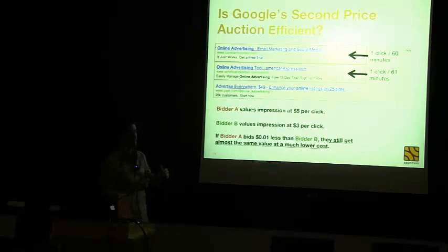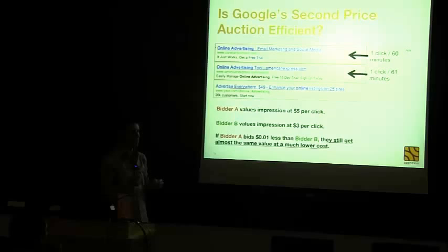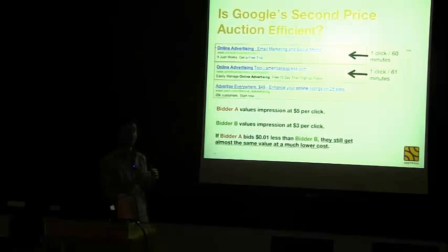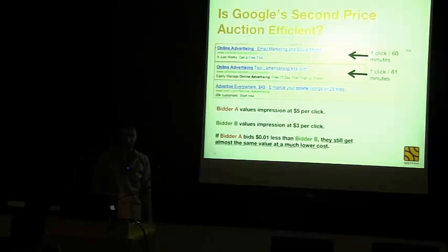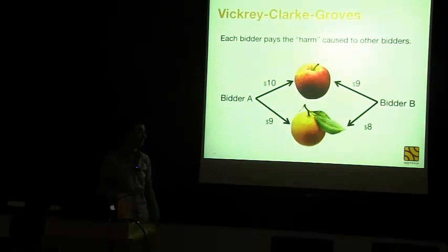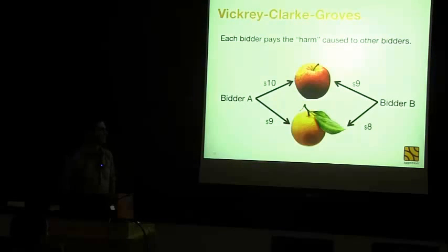If I value a click at $5 and the second highest bidder values a click at $3, why would I pay $5 to get the top spot? Why not bid $2.99, just below the second bidder? I'd be paying a lot less for something worth almost the same amount to me, since as an advertiser I care about how often people click on my ads. This creates an issue. There's a lot of research into how to solve this, but as you just learned, Vickrey-Clarke-Groves, or VCG, is the canonically right way to solve it.